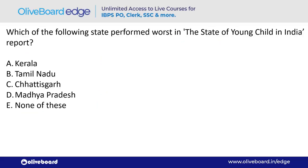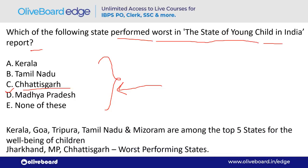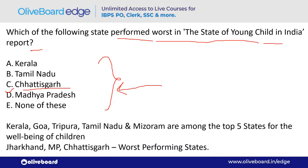Which state performed worst in the 'State of Young Child in India' report? The answer is Chhattisgarh (36 — option C). The last three worst-performing states are Jharkhand, Madhya Pradesh, and Chhattisgarh.